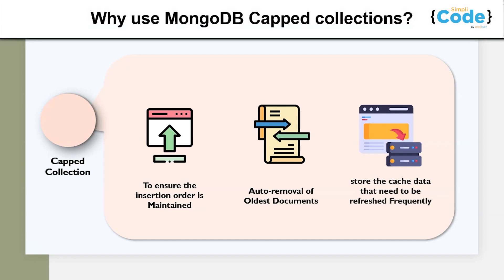The main reasons why we use MongoDB capped collections: first, to ensure that insertion order is maintained. Capped collections offer very high performance for CRUD operations because they preserve insertion order. Unlike normal collections which keep adding data, capped collections make sure that once the data is completely filled in the collection, it will automatically delete on a first-come-first-served basis.